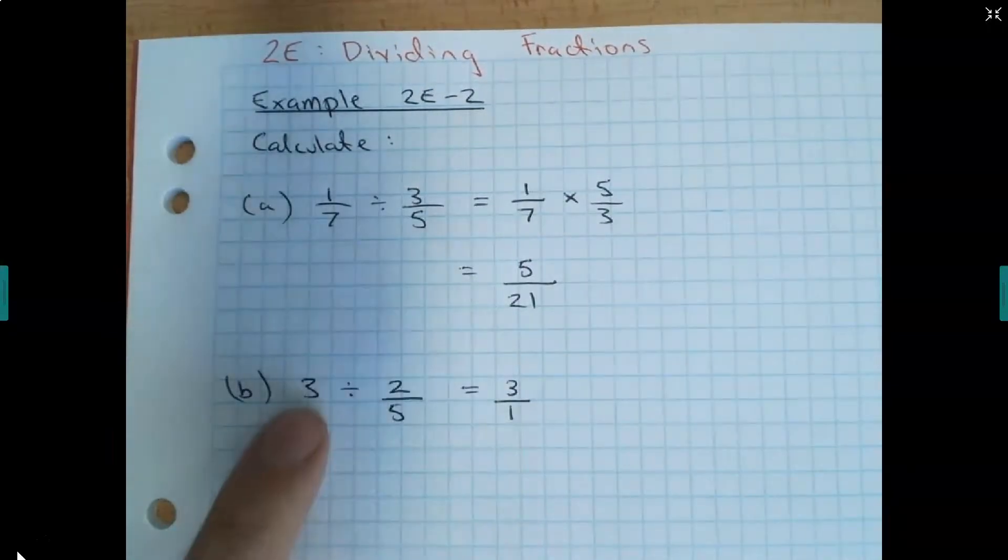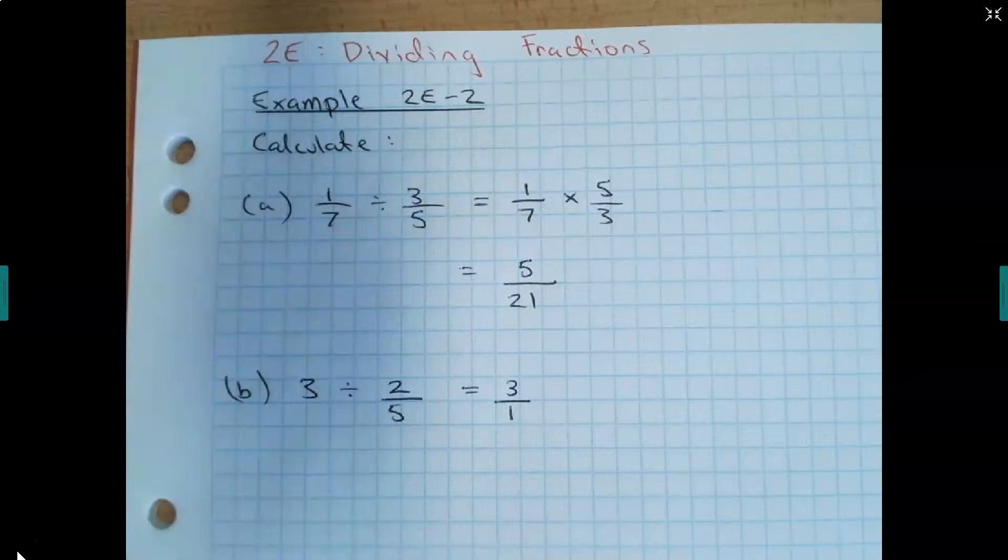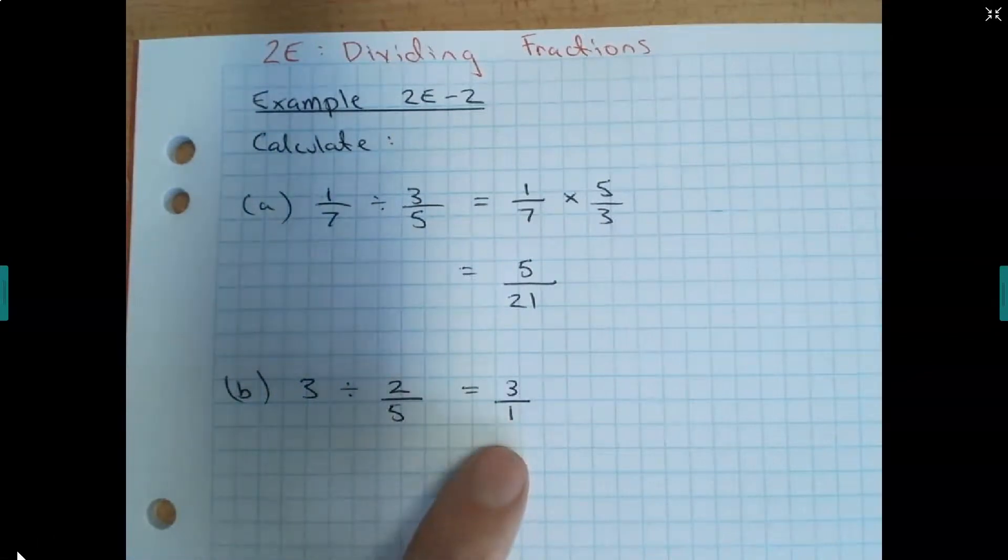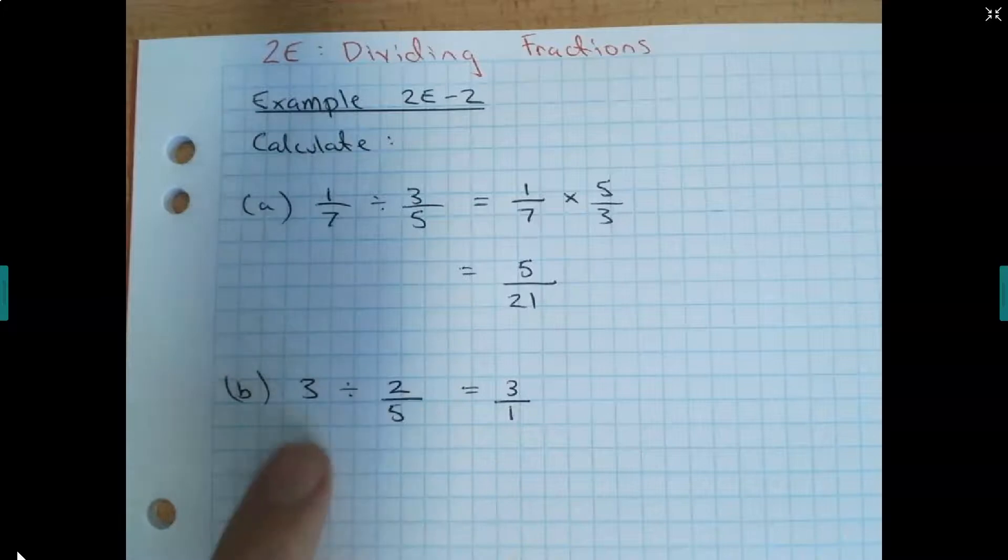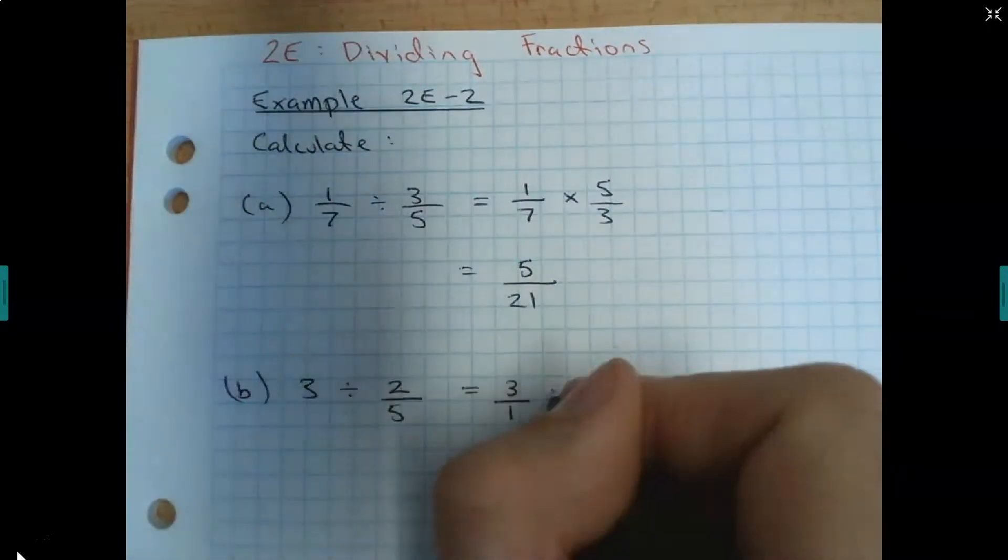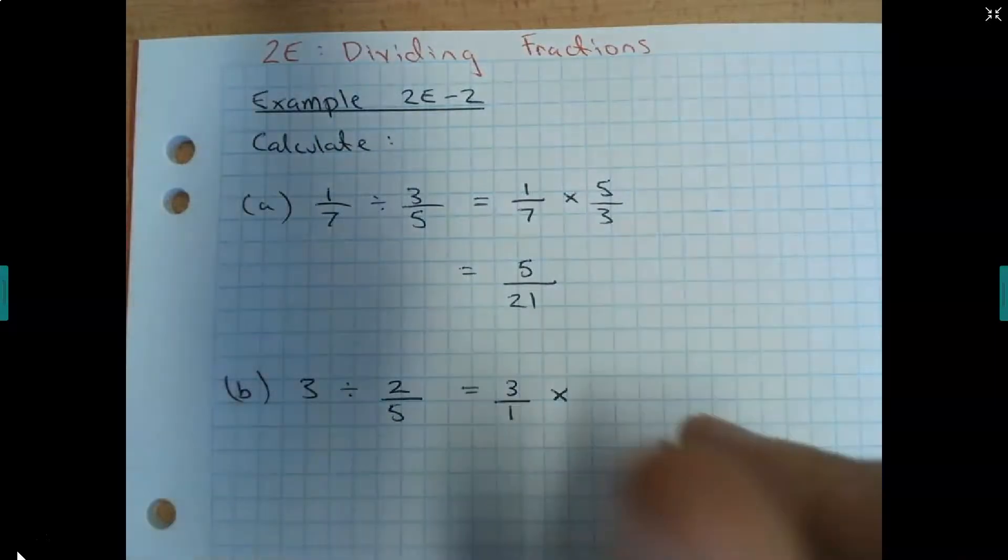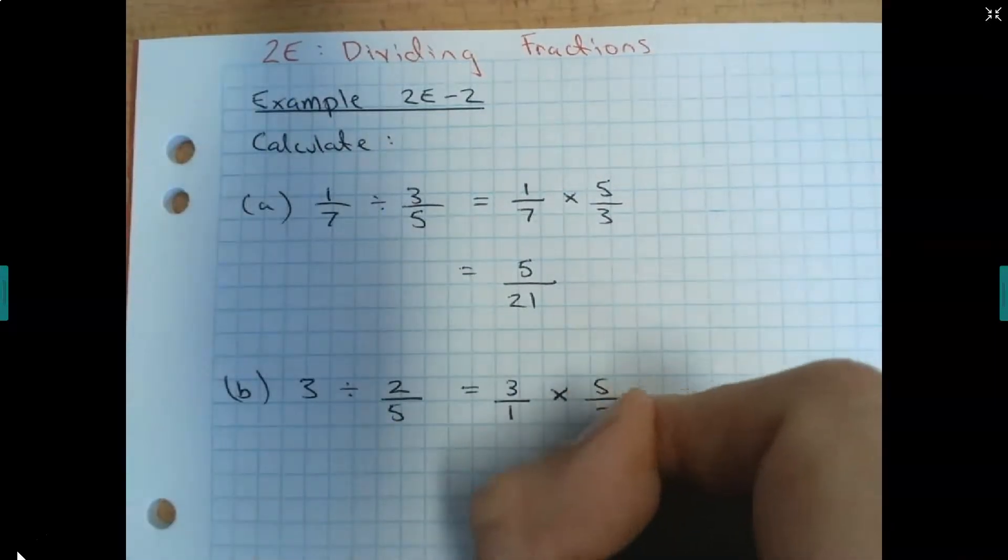Alright, because 3 over 1 is no different than 3. Remember, the first number always stays the same. See how 1 seventh stayed the same? Alright, so the 3 will stay the same, but I've just written it as 3 over 1. Because 3 divided by 1 is the same as just 3. Now, a division problem isn't that useful for us, so let's change this to a multiplication problem. And in doing so, we have to use the reciprocal of 2 over 5. So, the reciprocal of 2 over 5 is? Everyone? 5 over 2.